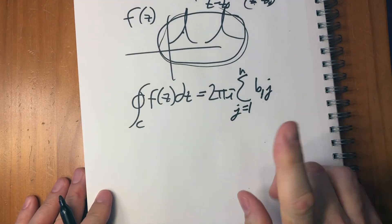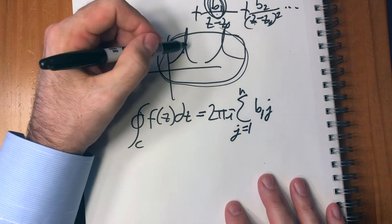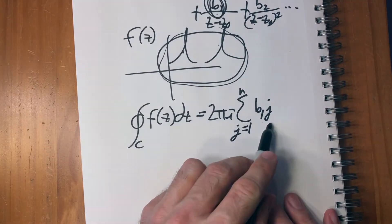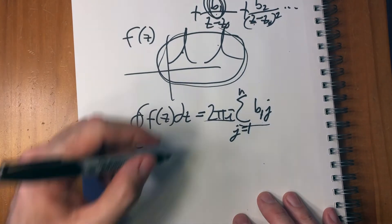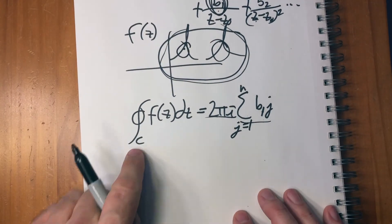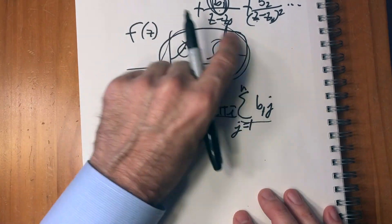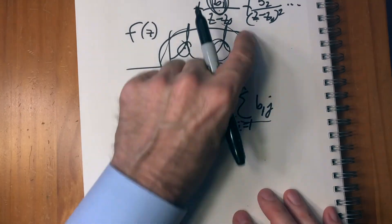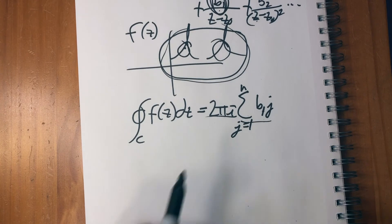So all you have to do, you find the coefficient for each one of the poles, you add them up, multiply it by two pi i again, because basically we're going around in circles. And that tells you the value of this whole function in a contour around those poles. That's amazing. It's so simple.